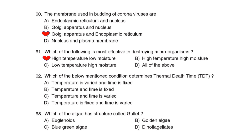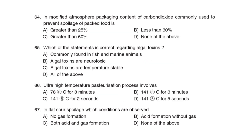62nd Question: Which of the below-mentioned conditions determines the thermal death time? Correct Answer: Option D: Temperature is fixed and time is varied. 63rd Question: Which of the algae has a structure called a gullet? Correct Answer: Option A: Euglenoid. 64th Question: In modified atmosphere packaging, the content of carbon dioxide commonly used to prevent spoilage of packed food is Correct Answer: Option C: Greater than 60%.